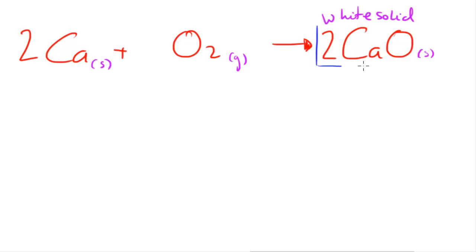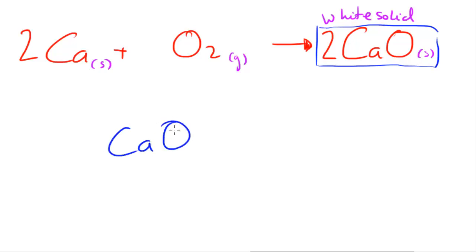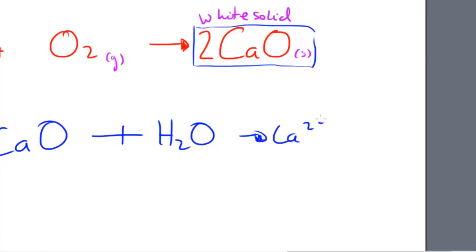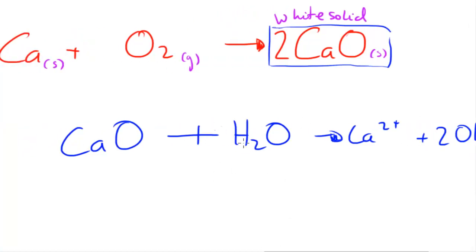This brings us to the reason why group 2 metals are called alkaline earth metals. When calcium oxide is placed in water it reacts to produce an alkali. The equation is: CaO + H₂O → Ca²⁺ + 2OH⁻. Because calcium oxide strongly dissociates in water, it doesn't stay as Ca(OH)₂ — it dissociates to form OH⁻ ions, making an alkaline solution.